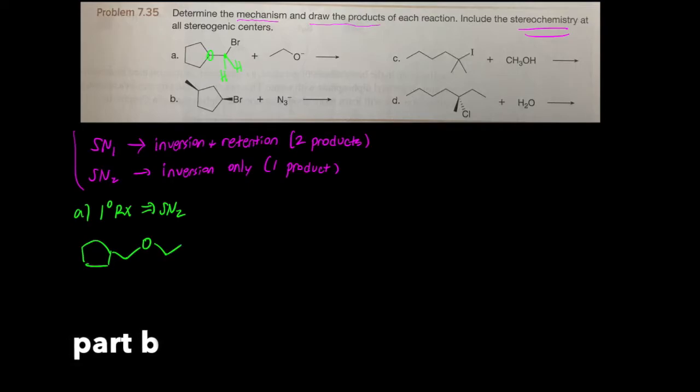In part B, we have a secondary... Well, let's slow down here. Here's the alpha carbon, right? And it's connected to one, two carbons. So that's a secondary alkyl halide. And that could be SN1 or SN2. So what you next need to do is look at the nucleophile. Do you have a negative nucleophile? Yes. So if you have a negative nucleophile, that's strong. And we say that that's going to favor SN2.